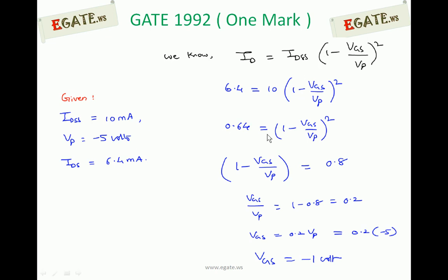So if you simplify you get 0.64 equals 1 minus VGS by VP whole square. If you take square root on both sides you get 1 minus VGS by VP is 0.8. So VGS by VP is 0.2. Now apply VP value. VGS equals 0.2 times minus 5, so VGS equals minus 1 volt. To get the drain current of 6.4 mA.